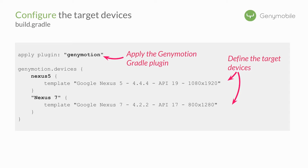You can get the template name from the GMTool admin templates command line. In this example, I also added a Nexus 7. Note that Nexus 7 is in quotation marks because there is a space between Nexus and 7 — quotes are not needed if there is no space in the name. So in five lines we were able to define two devices that will be run automatically before your tests. The configured devices are started before the Connected Android Test task and are automatically stopped and deleted at the end of the tests.